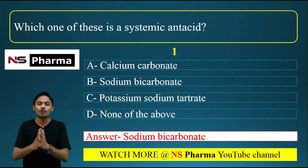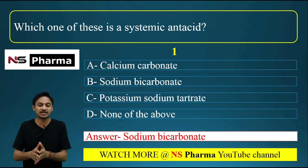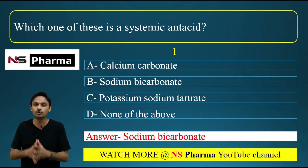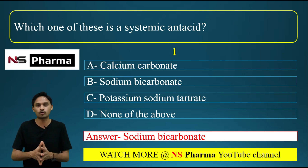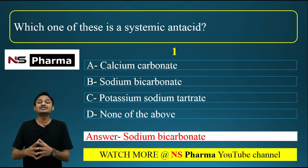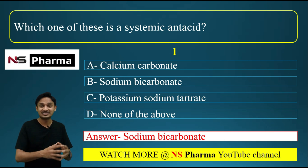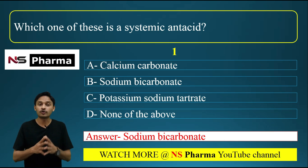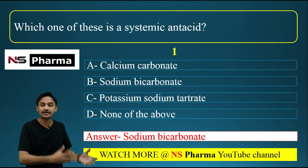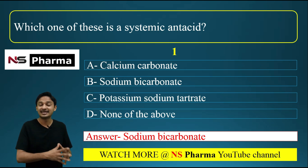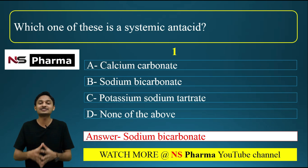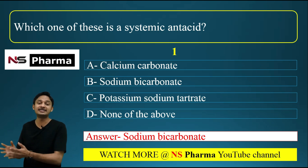One important point regarding antacids: magnesium-containing antacids can cause diarrhea as an adverse effect, while aluminium hydroxide can cause constipation.